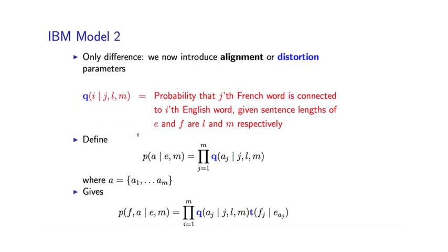The only difference is going to come in the alignment model. IBM Model 2 introduces what are called alignment, or sometimes called distortion, parameters.